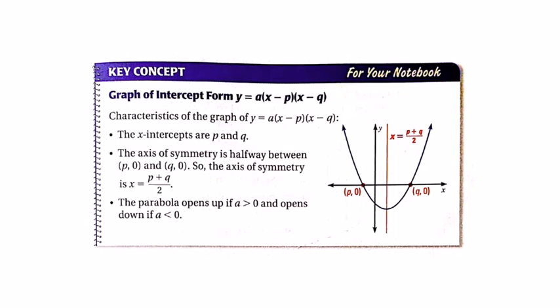Let's look at the key concept box. When my quadratic function is written in factored form, here are some of the characteristics. The x-intercepts are those p and q values. I want you to be very careful. If you see an x plus 3, that means your x-intercept is actually negative 3, because in this formula it should be x minus negative 3.